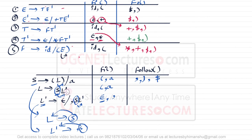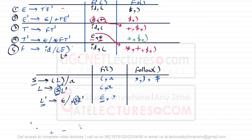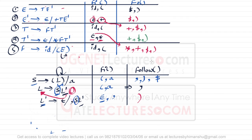For FOLLOW of L: L appears in the right-hand side in only one place, and after L the only symbol is closing bracket. So FOLLOW of L is closing bracket. For FOLLOW of L': L' appears in one location and nothing follows it, so FOLLOW of the left-hand side — which is FOLLOW of L — becomes FOLLOW of L'. Hence FOLLOW of L' is closing bracket. Remember, FIRST and FOLLOW describe what symbols can follow a particular variable in the process of derivation.